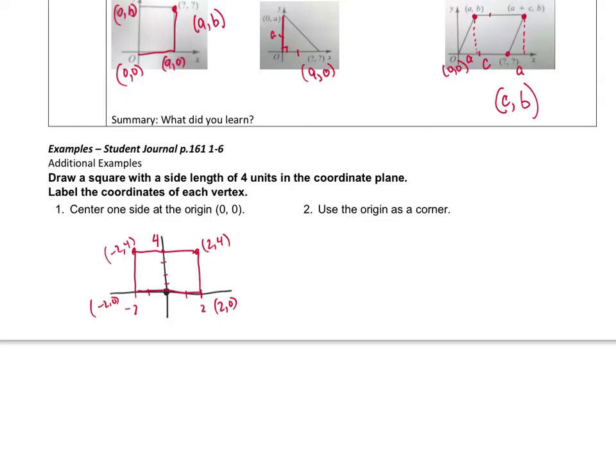We have to use the origin as a corner on the next one. So if this is my axes, using the origin as a corner would put this like that, and this is 0, 0. This would be at 4, 0. This would be at 4, 4. And this would be at 0, 4.